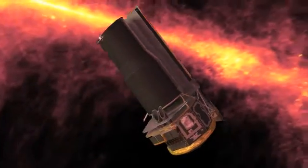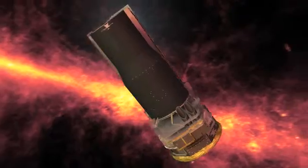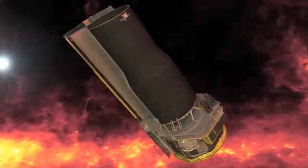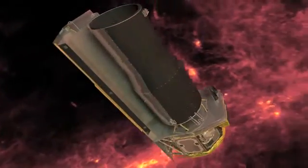Astronomers using NASA's Spitzer Space Telescope have detected what they believe is an alien world just two-thirds the size of Earth, one of the smallest on record.